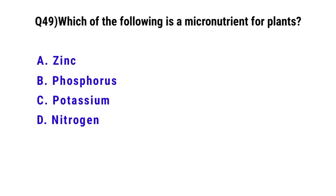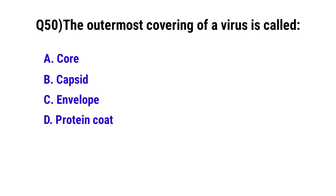Question 49: Which of the following is a micronutrient for plants? The correct option is A: zinc. Question 50: The outermost covering of a virus is called? The correct option is B: capsid.